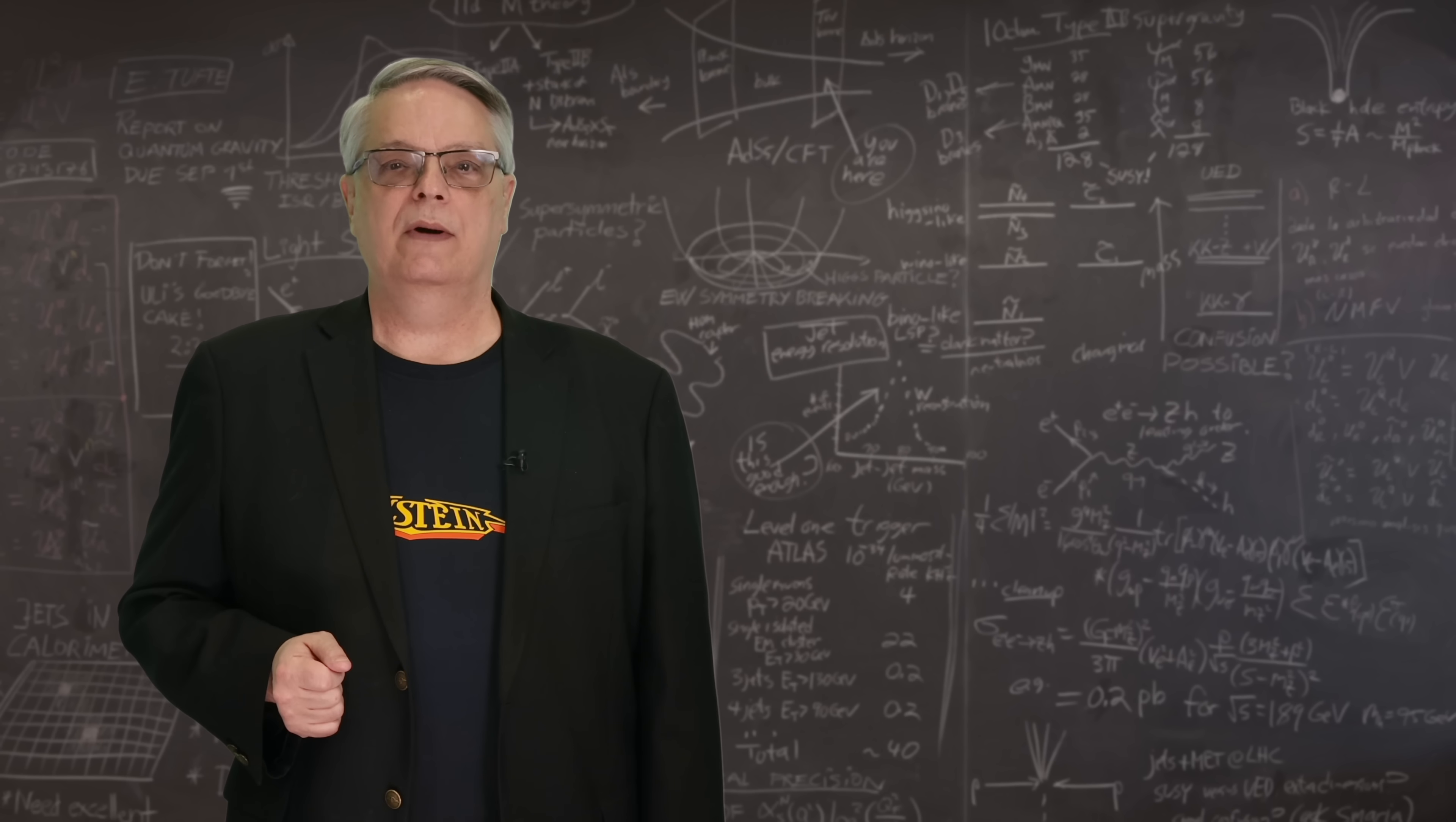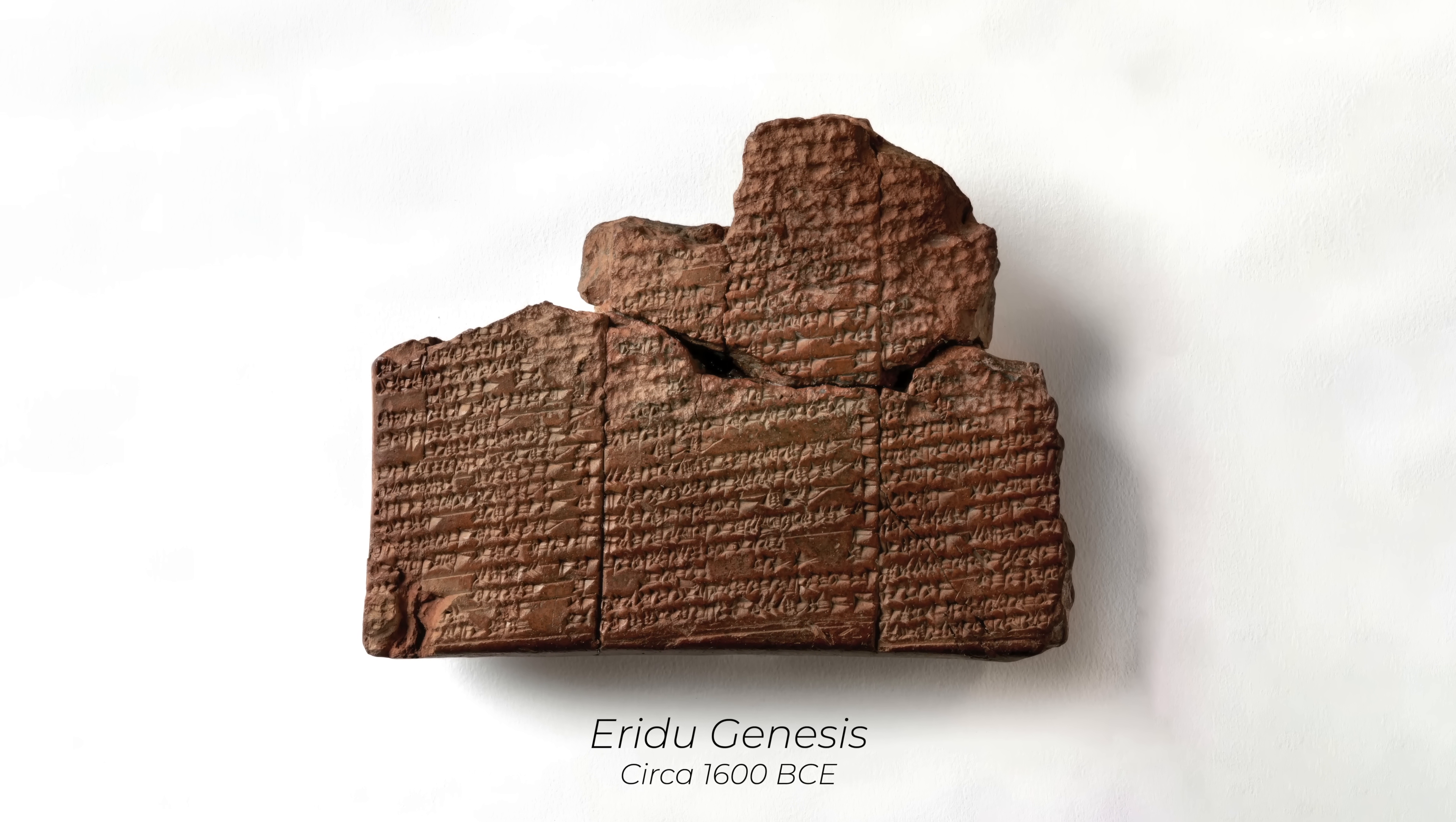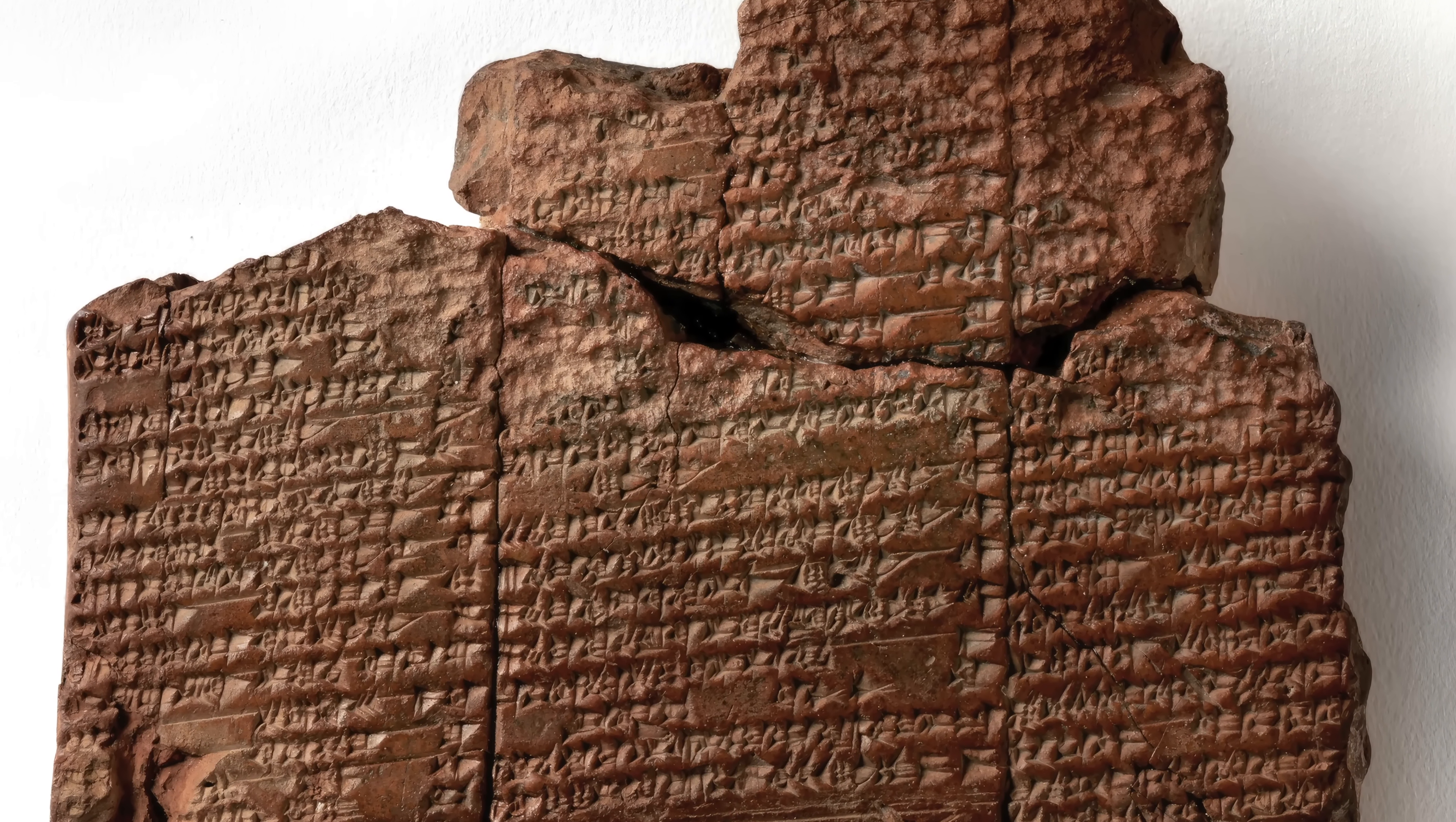Humanity has always been interested in what we might call big questions, like the ones about how the cosmos began or why the universe is the way it is. Indeed, some of the very earliest writings ask the same question. This cuneiform tablet, which is dated from about 3500 years ago, is called the Eridu Genesis.